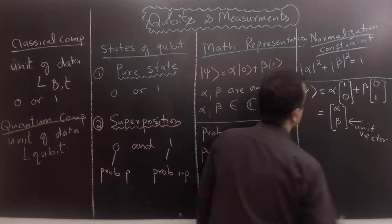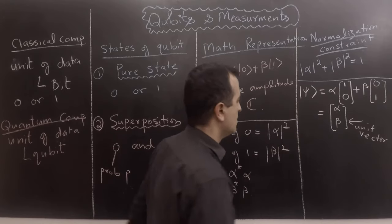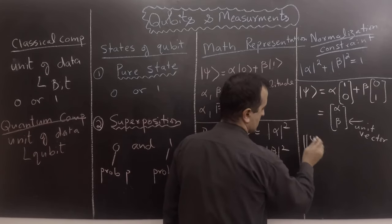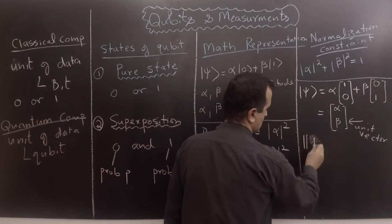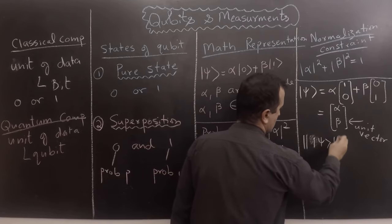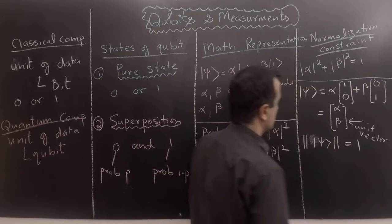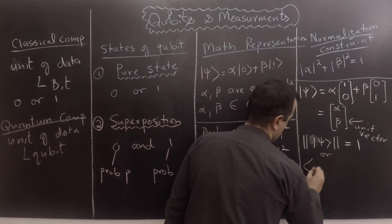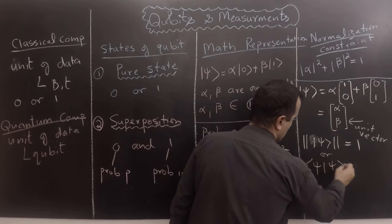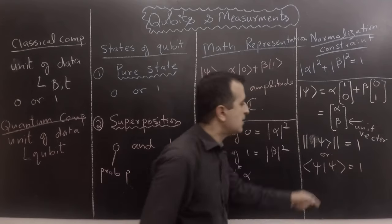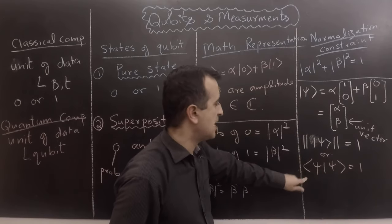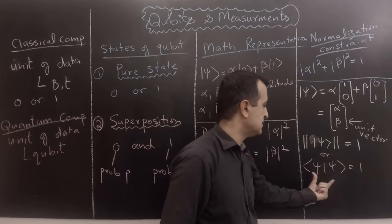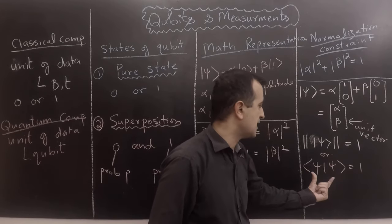The normalization constraint tells us that this vector is a unit vector. It implies that the magnitude, or norm, of this vector is equal to 1. We can eliminate the square root because if the quantity under it equals 1, only then will its square root be 1.